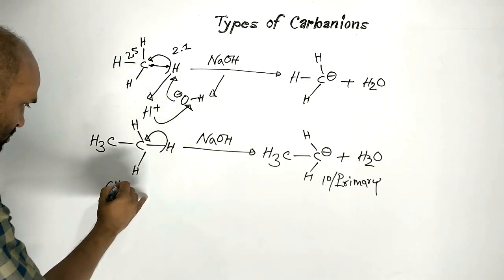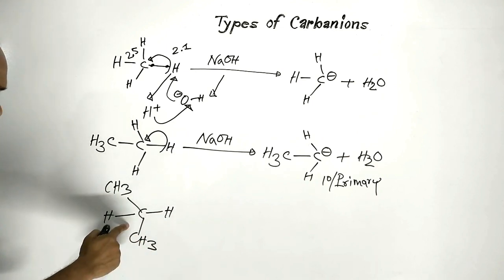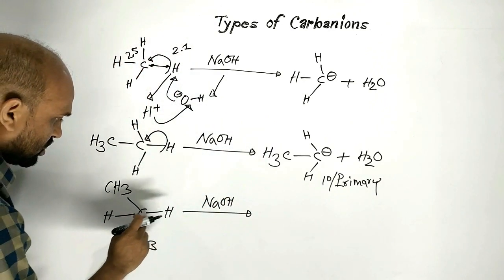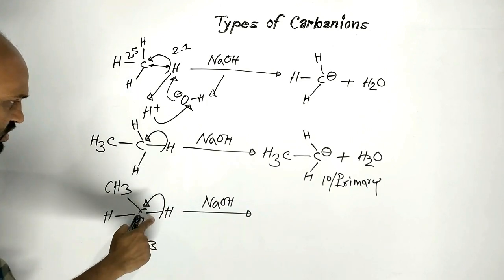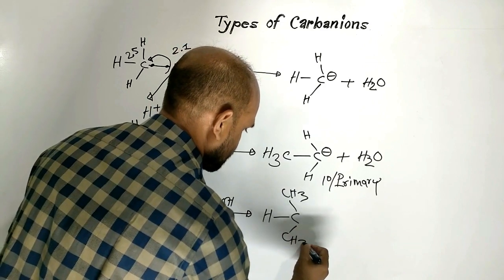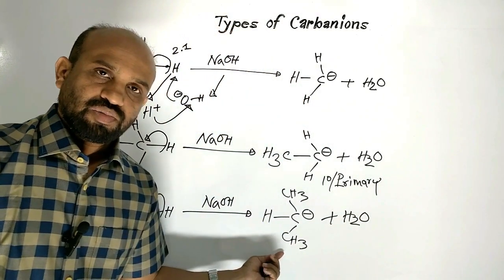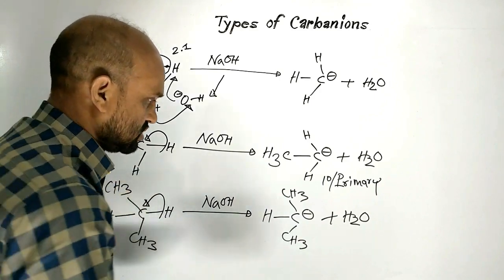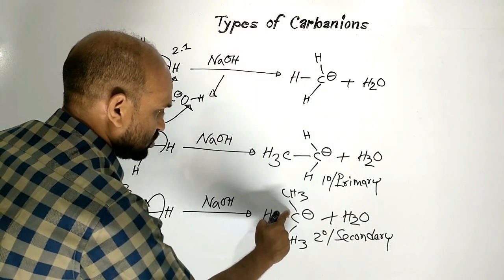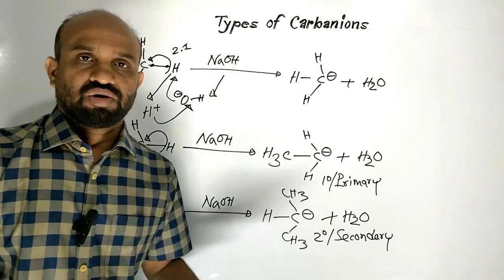Let us take another compound — propane. When it is treated with alkali, and this carbon-hydrogen bond suffers heterolytic fission, then an anion, that is a carbanion, is formed — the isopropyl carbanion. This is a two-degree or secondary carbanion, because the carbon with the negative charge is linked to two carbon atoms. That is why this is a secondary carbanion.